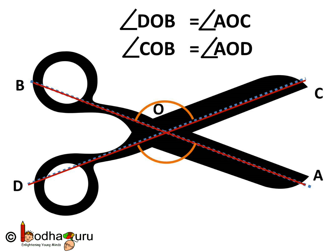Also if you see, angle COB is equal to angle AOD. These two are also vertically opposite angles.